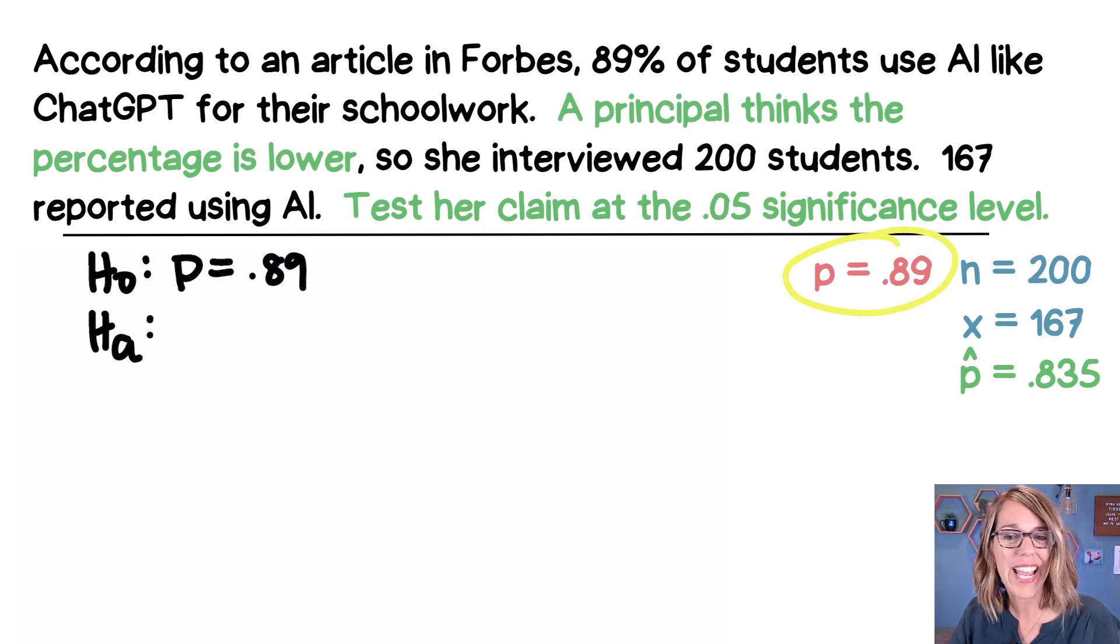But let's see what her claim is. So the principal thinks that the percentage is lower. So we're going to say that she thinks, this is our claim, lower would be less than 0.89. That's step one.